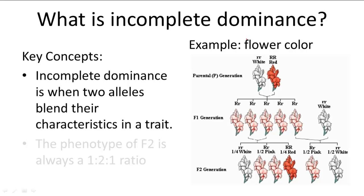For example, in flowers, neither the red nor the white allele is dominant over the other. So instead of having a red and white splotch flower as their offspring, all their offspring are pink.